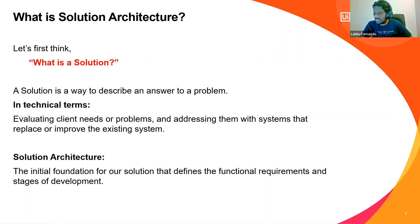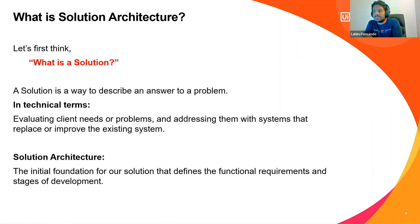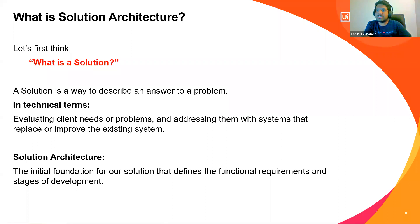One important thing to know is that RPA is not the solution for all problems — there can be other solutions as well. That's why we need to do proper requirement gathering and analysis to understand where RPA can fit in and how it can be applied to a process. Sometimes additional solutions can also come up apart from RPA. Solution architecture is the initial foundation for our automation solution, including functional requirements and the stages of solution architecture.